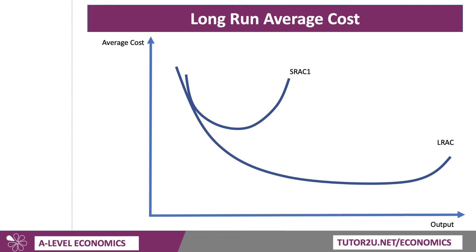The long run average cost curve itself is essentially derived from a series of short run average costs, each of which is associated with a given size of factory, plant, or scale of operation. Think of this as a car maker or a manufacturer of electric vehicle batteries — they can operate with a unit cost curve shown as AC1 in the short run, but they might be able to scale up their production and move on to SRAC2 in the long run, and that involves lower costs.